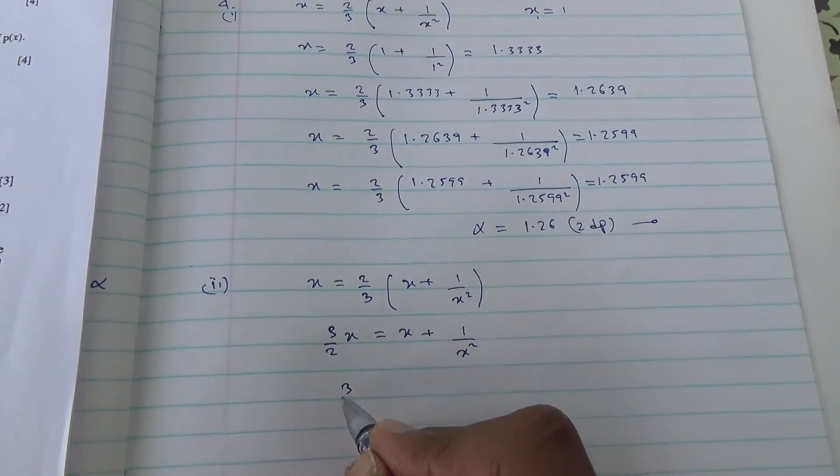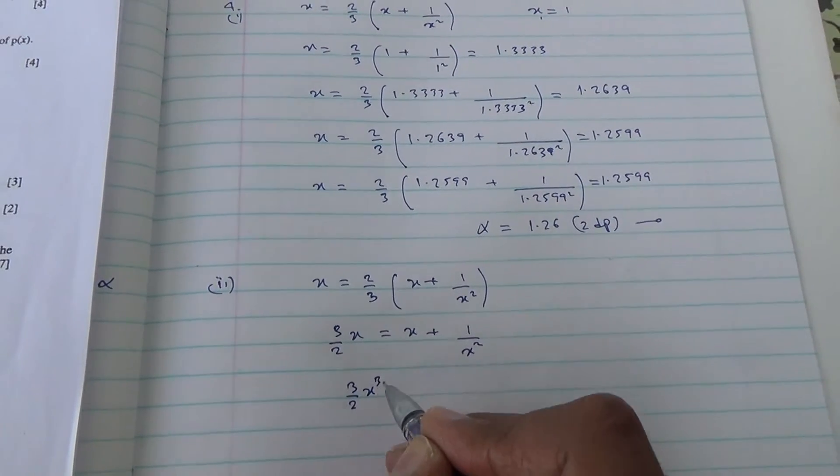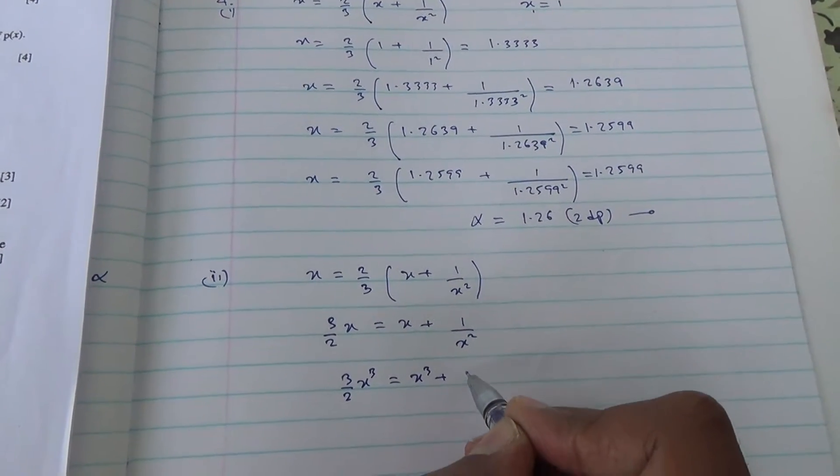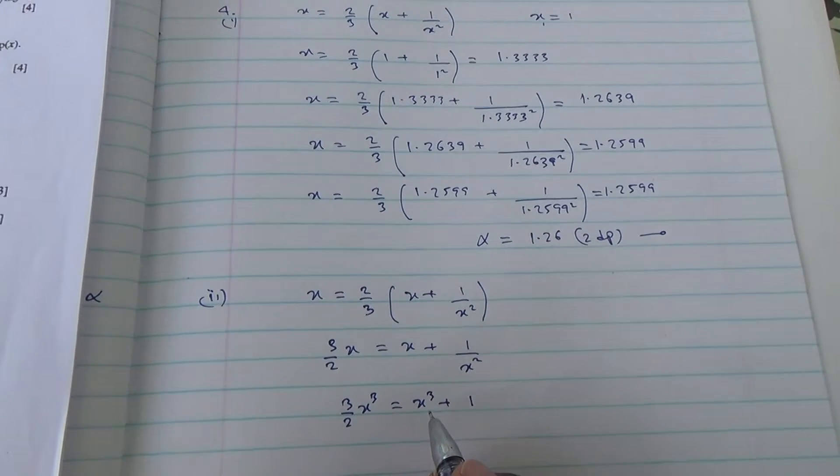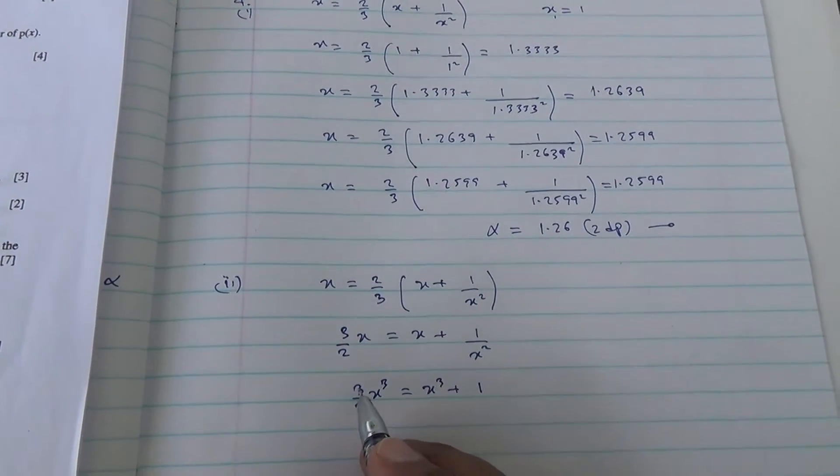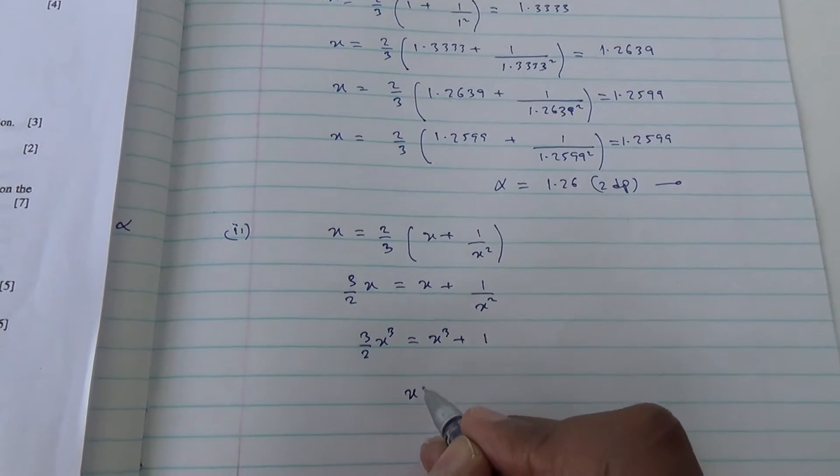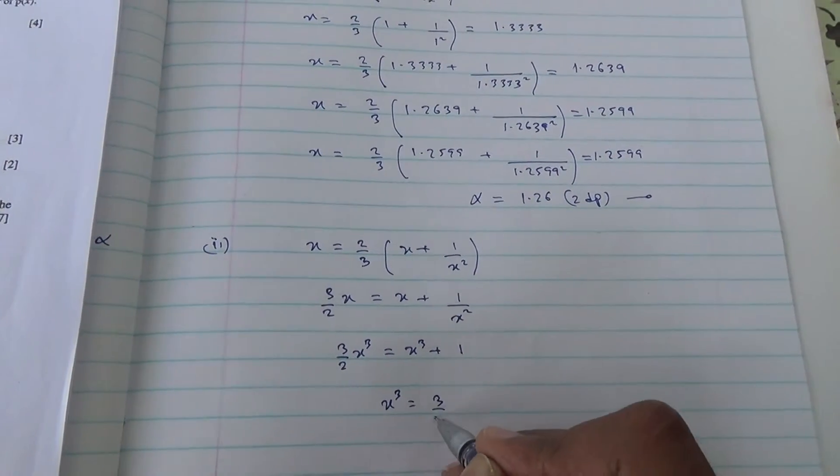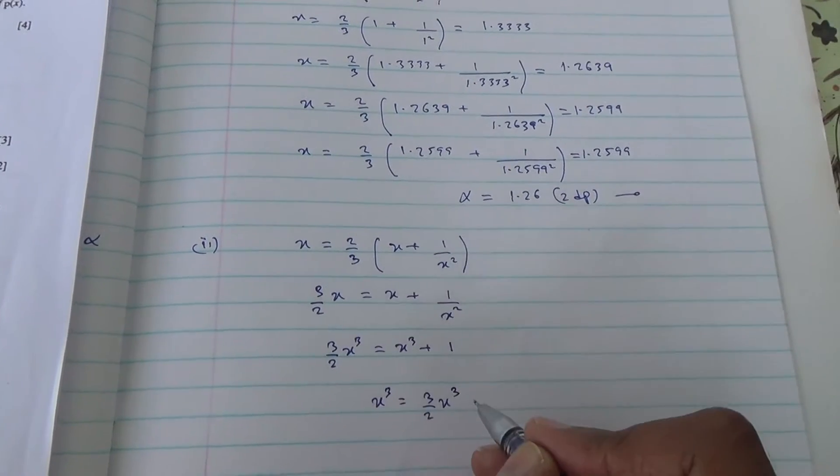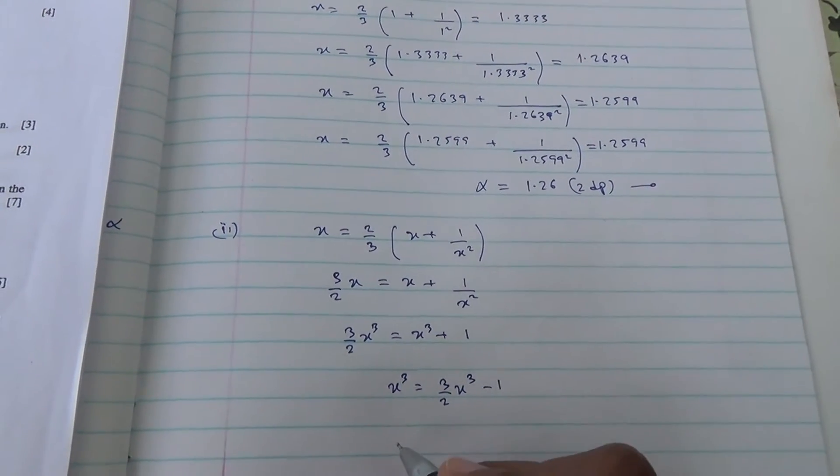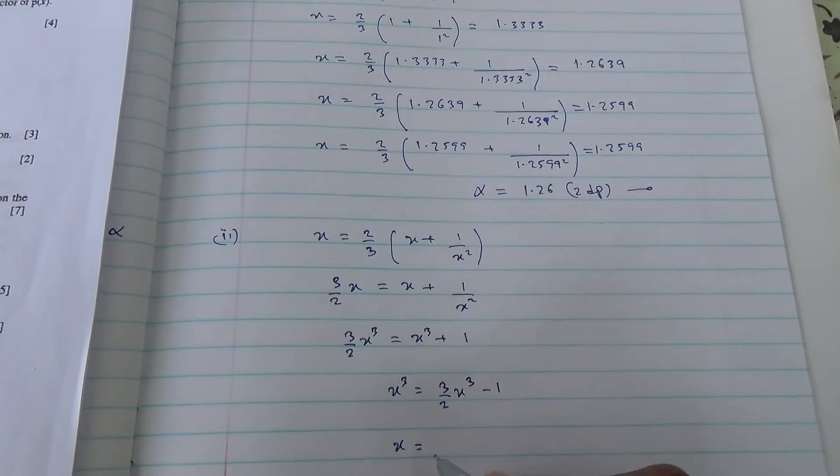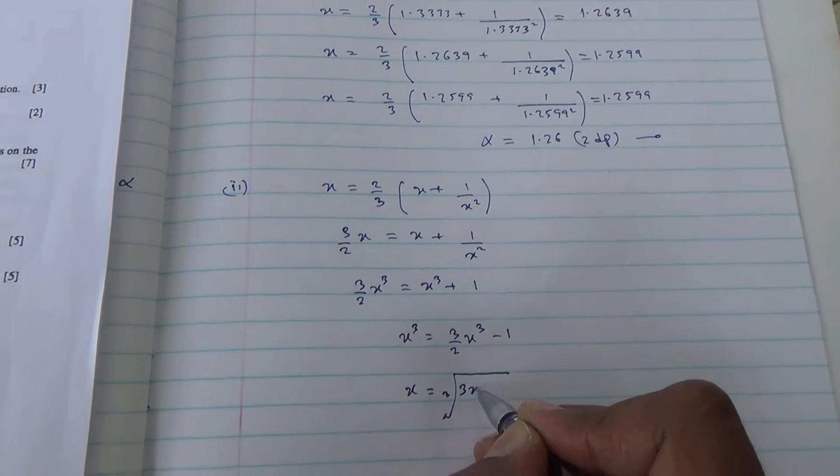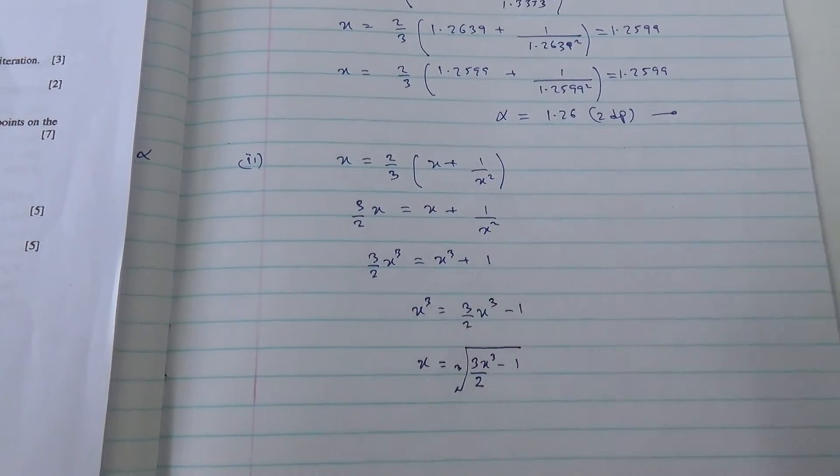You have 3 over 2x is equal to x plus 1 over x squared. x squared times that is 3 over 2x cubed is equal to x cubed plus 1. From here we can send the plus 1 on the other side. So x cubed is equal to 3 over 2x cubed minus 1. And therefore we have x is equal to the cube root of 3x cubed minus 1 over 2.